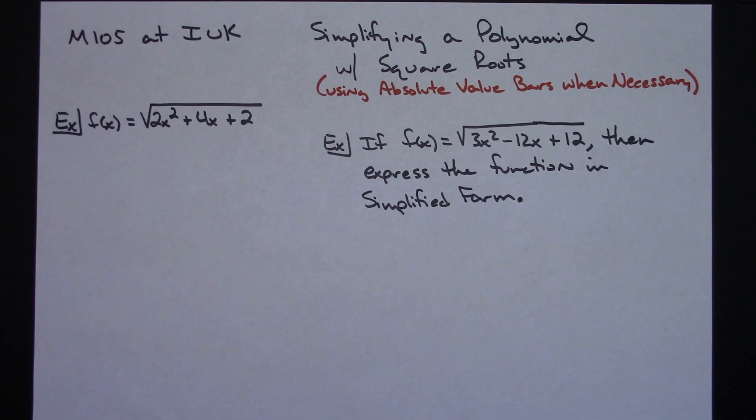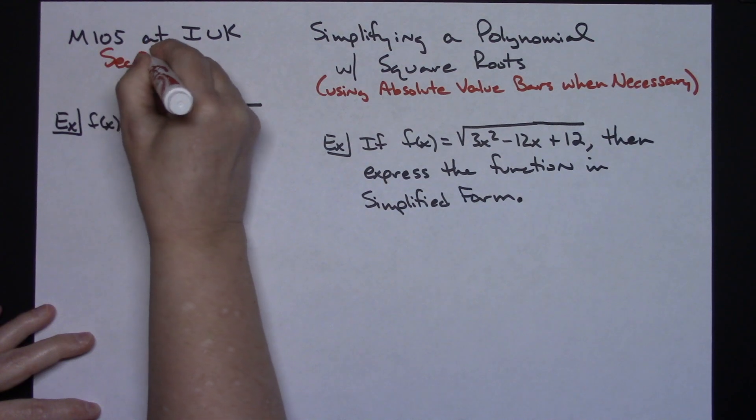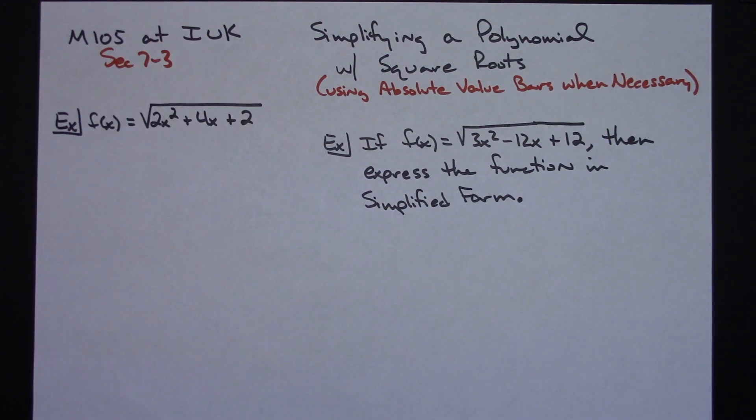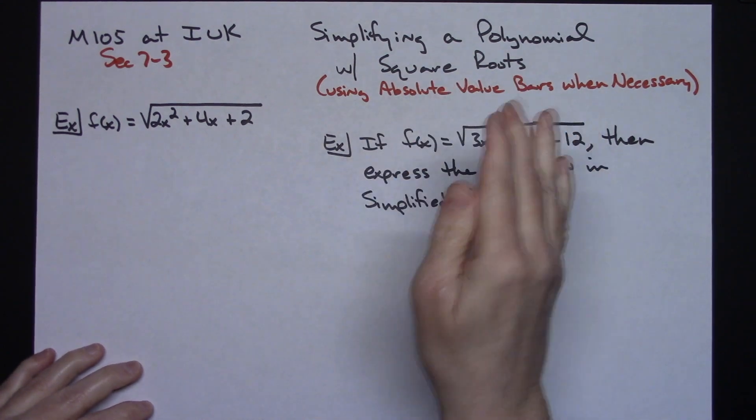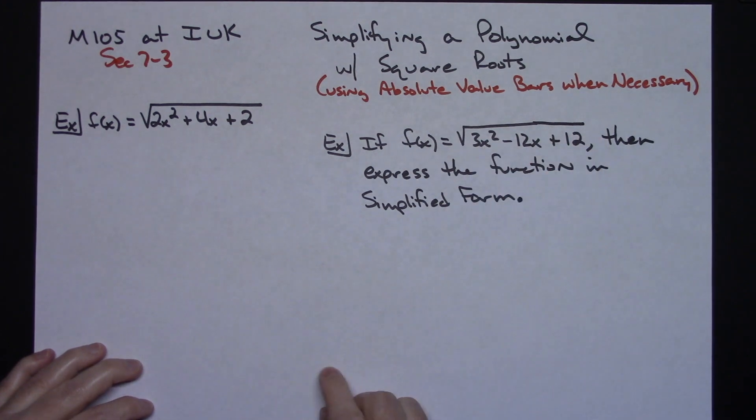In this video I'm specifically making it for M105 at IUK. This is dealing with section 7-3. We're going to be focusing on simplifying square roots when there is a polynomial function underneath.